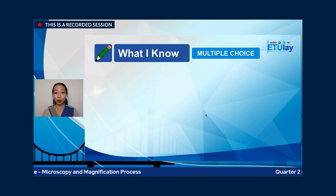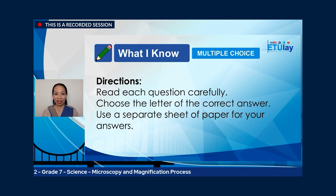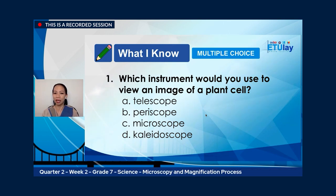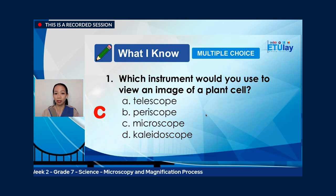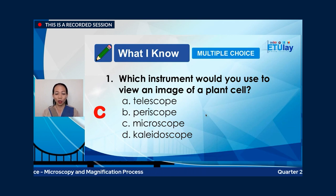This pre-test is in a multiple-choice format. Read each question carefully, choose the letter of the correct answer, and use a separate sheet of paper. Number one: which instrument would you use to view an image of a plant cell? A, telescope; B, periscope; C, microscope; or D, kaleidoscope? The correct answer is C, microscope. A telescope lets you view distant objects. A periscope lets you observe surroundings while remaining undercover, while a kaleidoscope reflects images of colored glass in geometric designs.